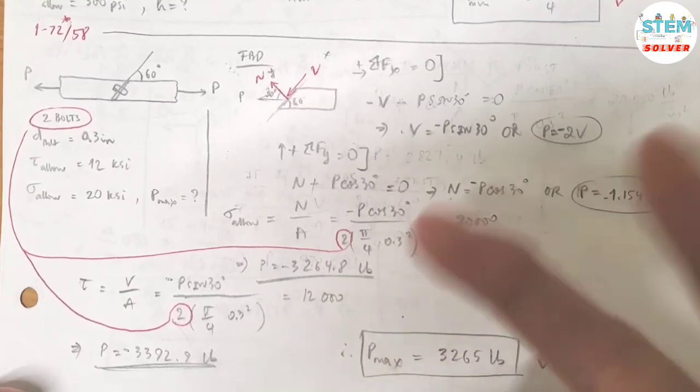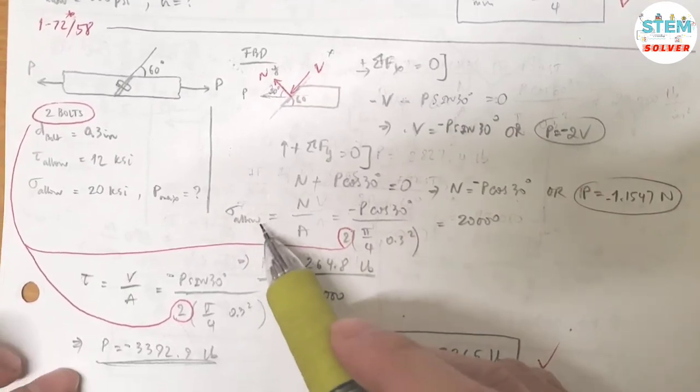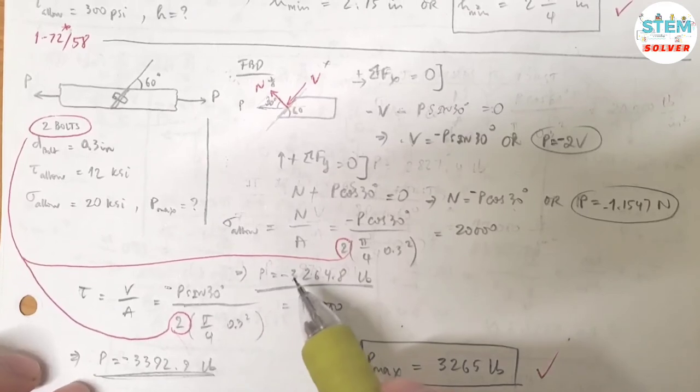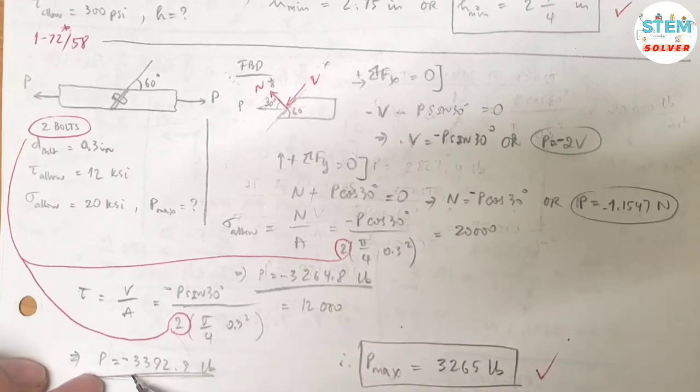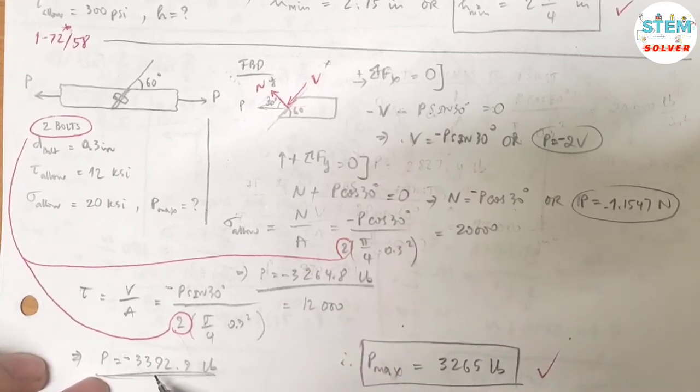Alright, now let's compare. So you have two P values, one for the normal stress and one for the shear stress. The normal stress gives 3,264 pounds. Shear stress gives the P value of 3,392 pounds. So this one is greater than this one.